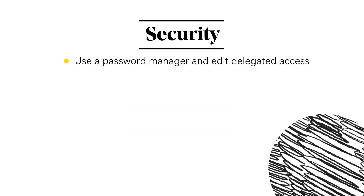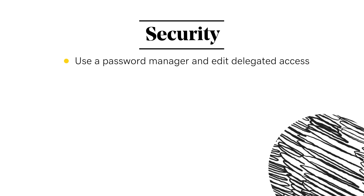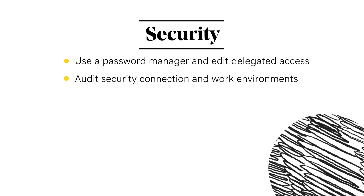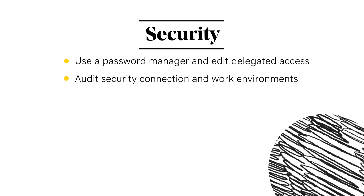Also, use password managers or software that doesn't disclose the passwords of your clients. Make sure any delegated access is the correct level — start with the lowest level access and work your way up. Be aware of your subcontractors' or outsourcing team's computer connection and what protection they have for internet security. Many security breaches happen as a result of subcontractors being unaware that their internet connection from a coffee shop or the passwords they create for client accounts are insecure.